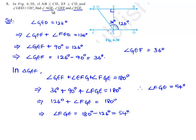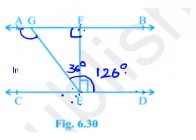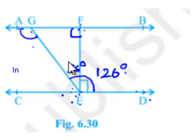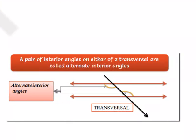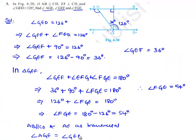We still have to find angle AGE. It is given that AB is parallel to CD. If we consider GE as a transversal, then angle AGE and angle GED are alternate interior angles. We know that when lines are parallel, their alternate interior angles are equal. Therefore, angle AGE equals angle GED, which equals 126 degrees.